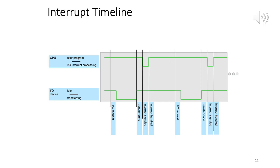Now on slide 11: 'Interrupt Timeline.' Two different interrupts are generated and the CPU needs to handle them. The top line represents the CPU; the bottom signal line represents IO devices. For the CPU, the upper state means a user program is running; the lower means the CPU is processing an interrupt. For the IO device, the top line means it's idle; the bottom means it's transferring data. Initially the CPU is executing user programs and IO is idle.